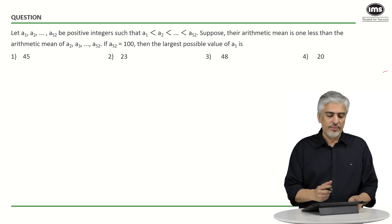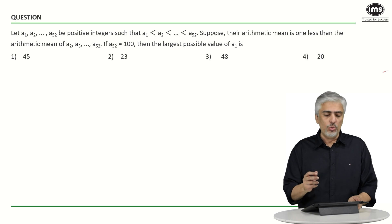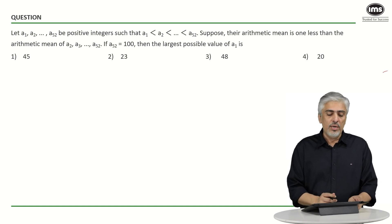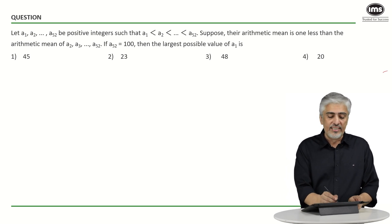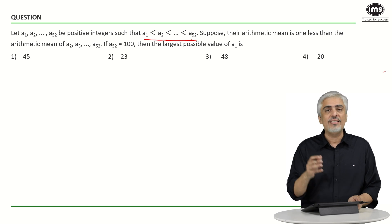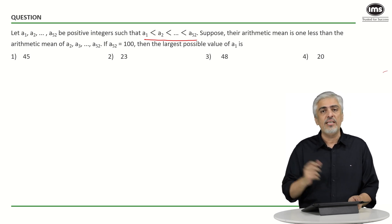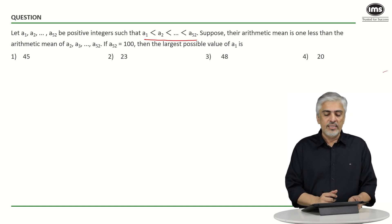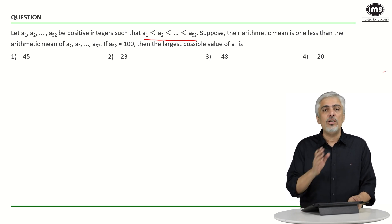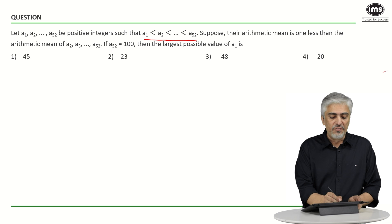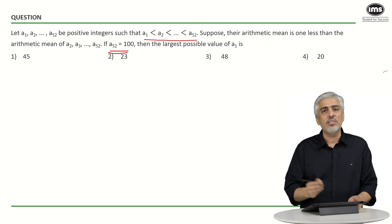Let's have a look at the next question. They've told us a1, a2, a3 up till a52 be positive integers such that a1 is less than a2 is less than a3 is less than a4 up till a52. Suppose the arithmetic mean is one less than the arithmetic mean of a2 up till a52. If a52 is 100, what is the largest possible value of a1?